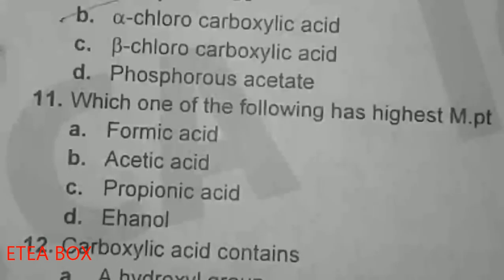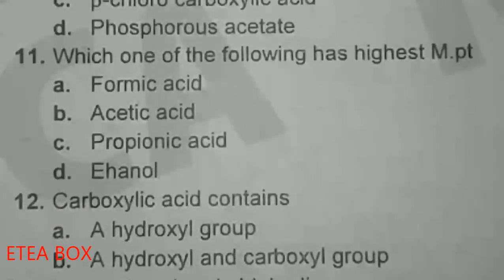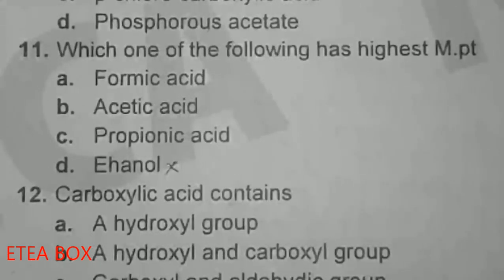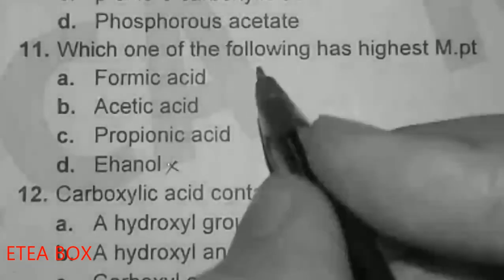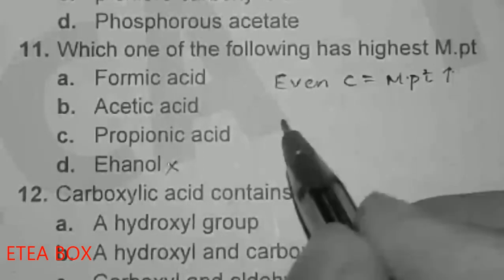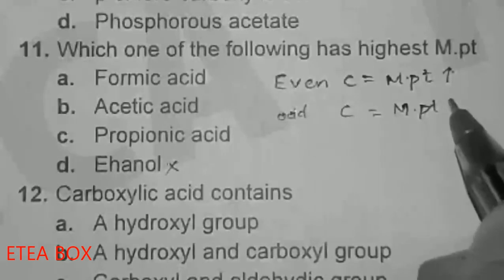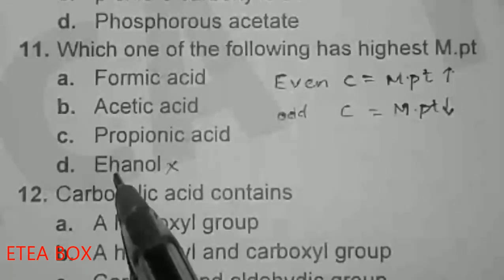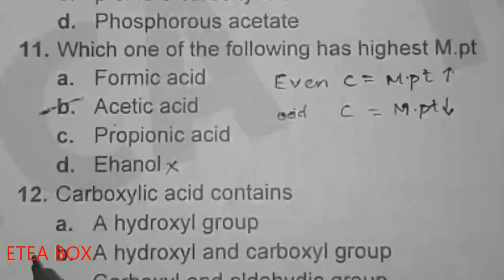Which of the following has the highest melting point? We compare alcohol and carboxylic acid: carboxylic acid has greater hydrogen bonding, so it has a greater melting and boiling point than alcohol. Among carboxylic acids, for an even number of carbon atoms the melting point is higher, and for an odd number it is lower. Formic acid and propanoic acid have odd numbers of carbons — low melting point. Acetic acid has an even number of carbons, so it has the highest melting point. Option B is correct.